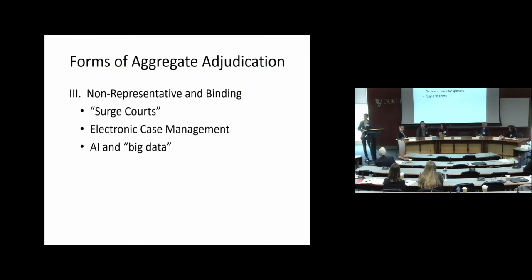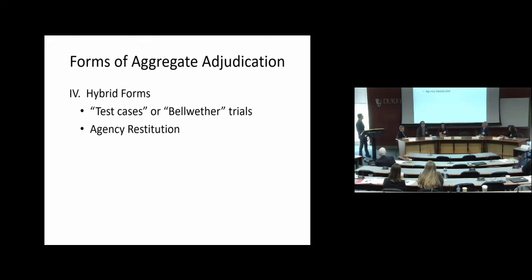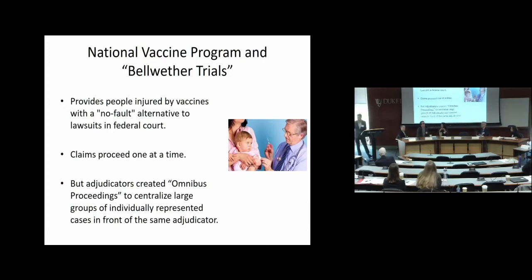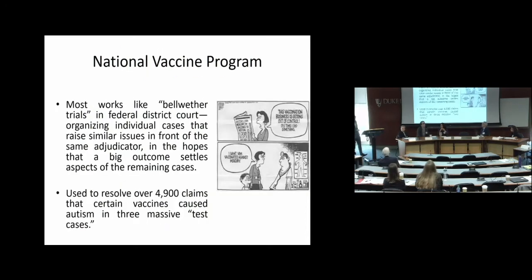The last type is hybrids — a mixture of all this. The most notable one is the National Vaccine Program, which compensates kids injured by vaccines on a no-fault basis. Claims proceed one at a time, but when 4,000 parents filed claims saying vaccines cause autism, it didn't make sense to adjudicate that scientific question over and over again. So they came up with a bellwether trial process — they adjudicated three cases with the hopes that the outcomes would inform the attorneys on how to handle the remaining ones. This kind of bellwether trial process is also used in the UK and in the Netherlands, and it was a very effective way to deal with those types of claims.